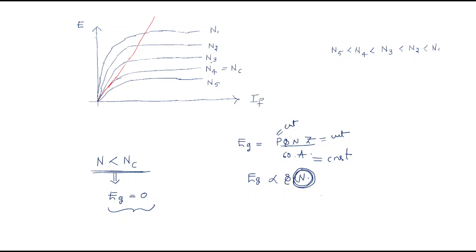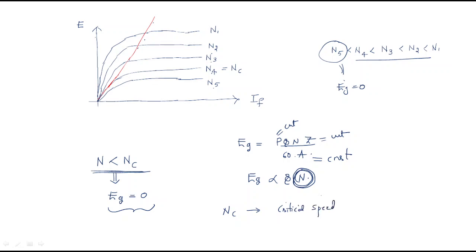For critical field resistance, it should be low, while critical speed should be high — that is the difference. Looking at the speed curves: for n4 we have a point where the EMF is generated (at the red line), but at n5 the EMF generation becomes zero. This is called the critical speed NC. Below the critical speed, the EMF fails to develop.